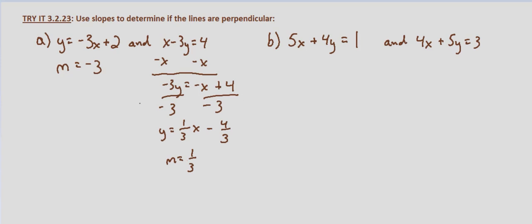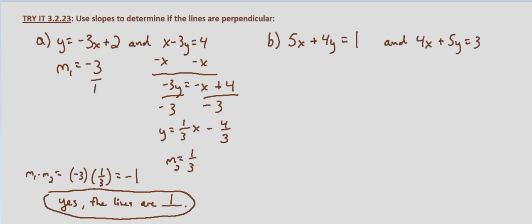So is 1 third the opposite reciprocal of negative 3? Yes, because negative 3 is the same as negative 3 over 1, so if we flip it we end up with negative 1 third and then change the sign to get 1 third. To verify, we'll call this m1 and m2. m1 times m2 equals negative 3 times 1 third which equals negative 1. That verifies that yes the lines are perpendicular because their slopes are opposite reciprocals.